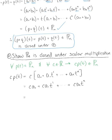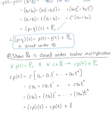We group the constants together: c times a naught, which is just a single constant, plus c times a sub 1 times t to the first, continuing all the way to c times a sub n times t to the n. We have found a new polynomial that exists in the set of all polynomials. c times p of t is in P sub n, the set of all polynomials. Therefore, P sub n is closed under scalar multiplication.